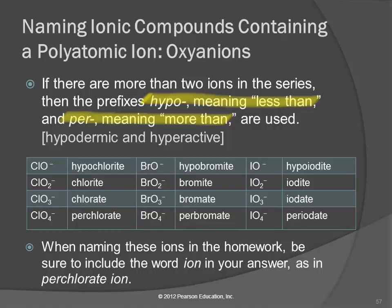Just a note here, when you're doing the homework, and it asks you what's the name for BrO-, and you type in hypobromite, it's going to say try again. It wants you to write the word ion in there, hypobromite ion. So it's going to be picky about that. I won't be picky about that on an exam, but technically, ion is part of its name.